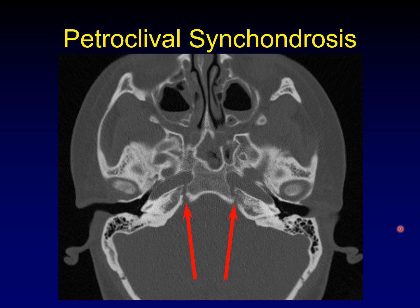Another important anatomic relationship for the clivus is the petroclival synchondrosis. This is the clivus; this is the petrous portion of the temporal bone. The line between them has variable width — sometimes it's nice and wide, sometimes it's a very narrow little line, and sometimes it's essentially not appreciable on CT. But in this location is the petroclival synchondrosis, which is obviously famous as a site for chondrosarcomas to arise in the skull base.